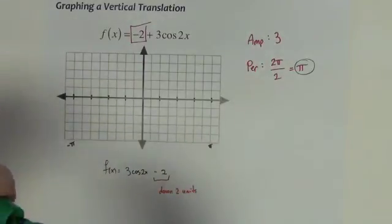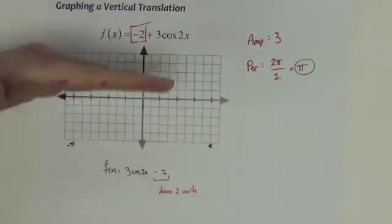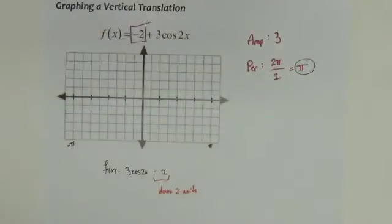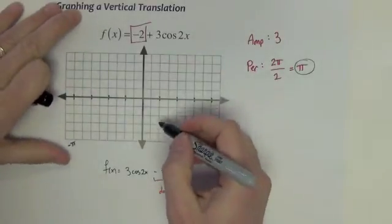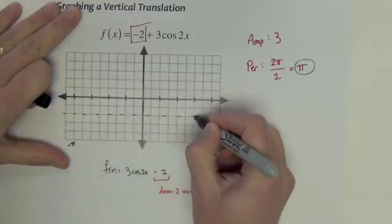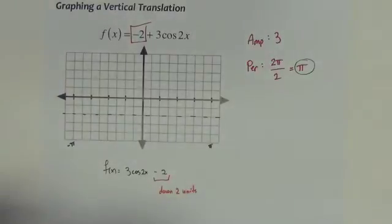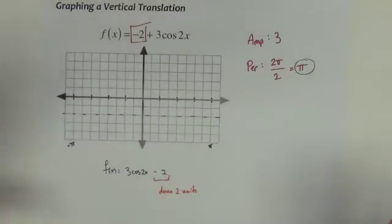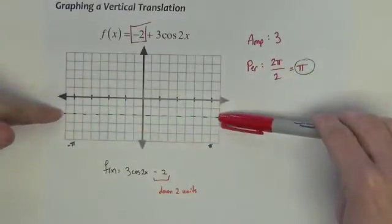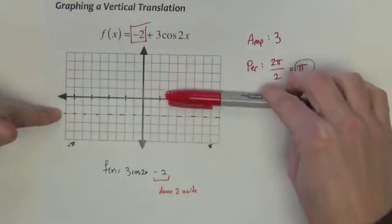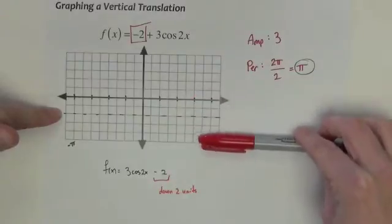Now this graph is going to do the same thing, up three, down three, as it kind of goes, showing its amplitude, but the whole thing's got to shift down two units. So what I like to do is just on my graph, I'm just going to come down two units and either kind of visually imagine it or I draw it on the graph like that just with like a nice kind of lightly penciled in dotted line. I'm basically going to pretend now that this dotted line is the x-axis.